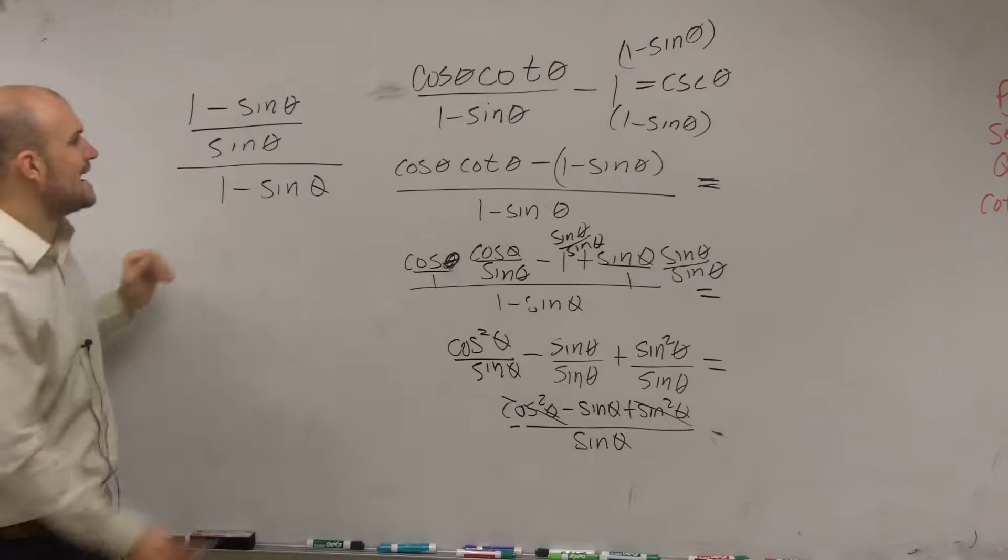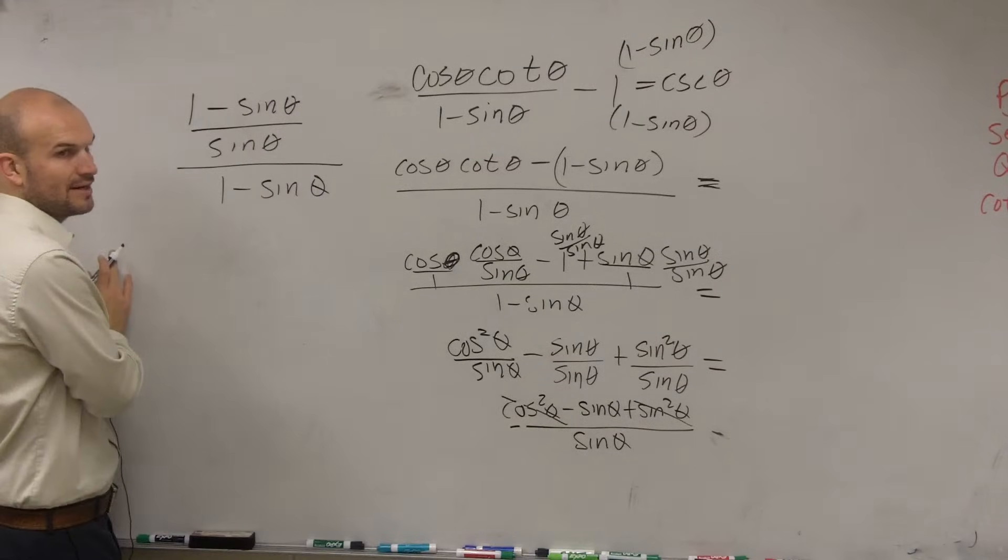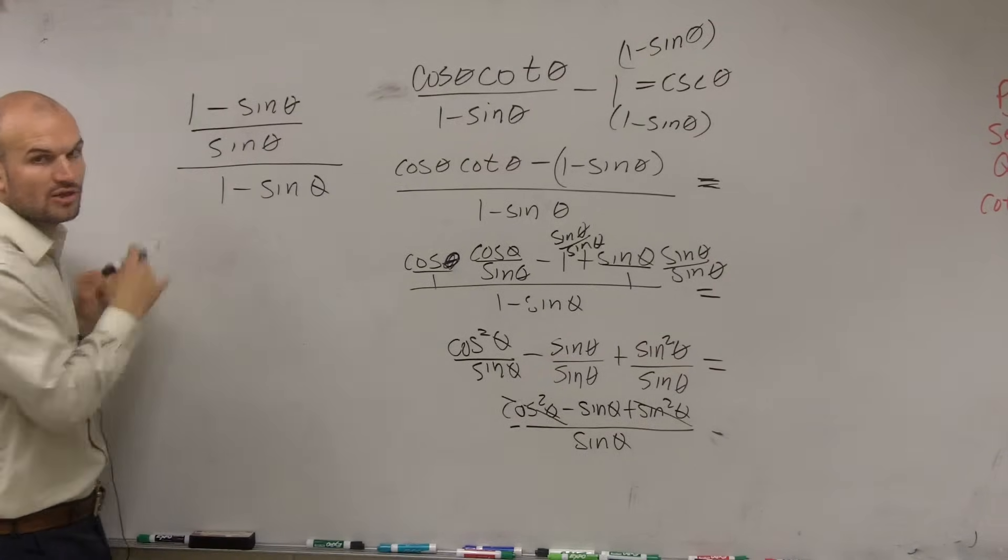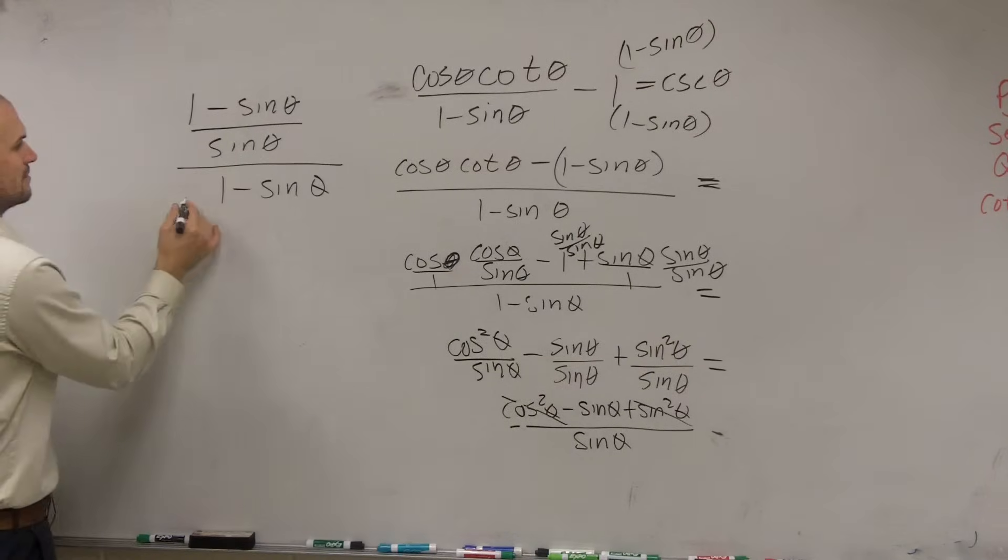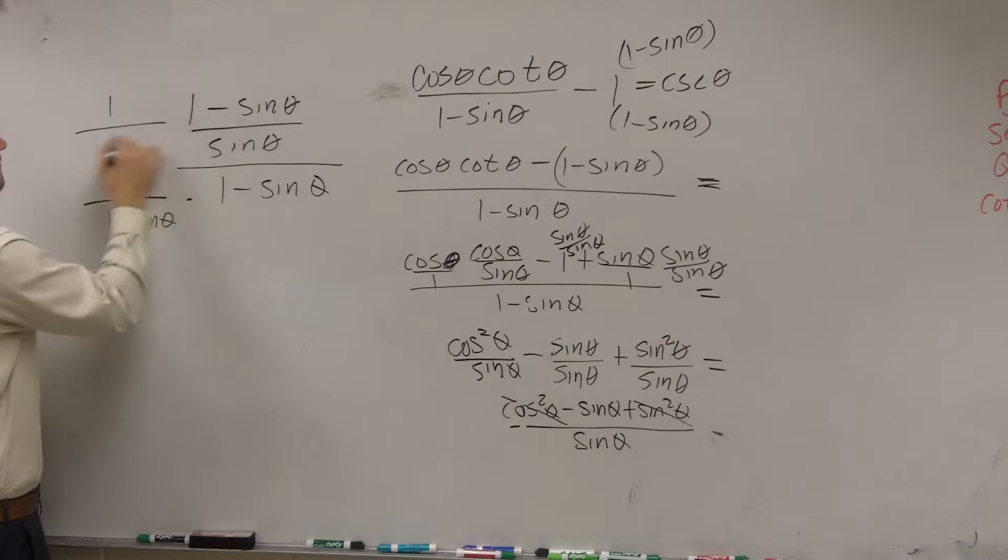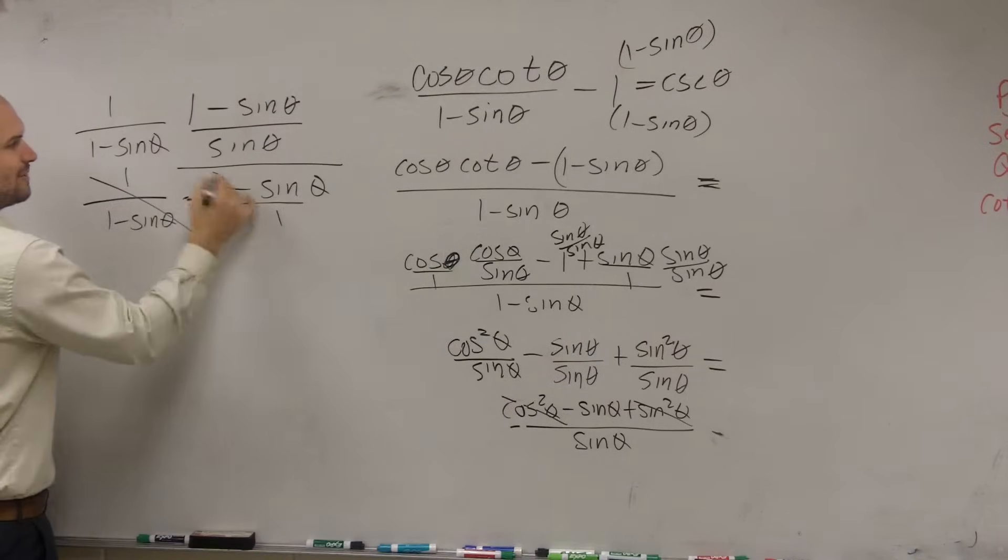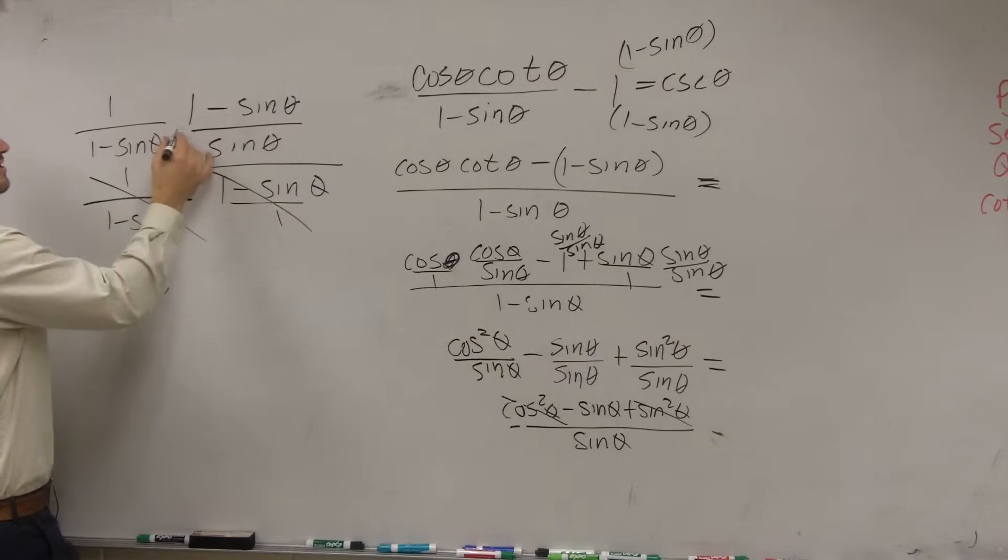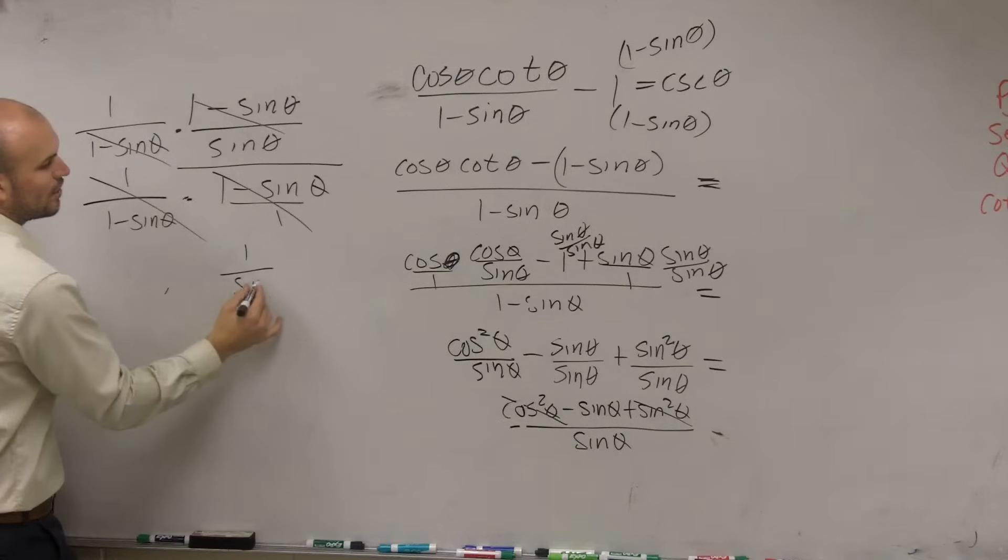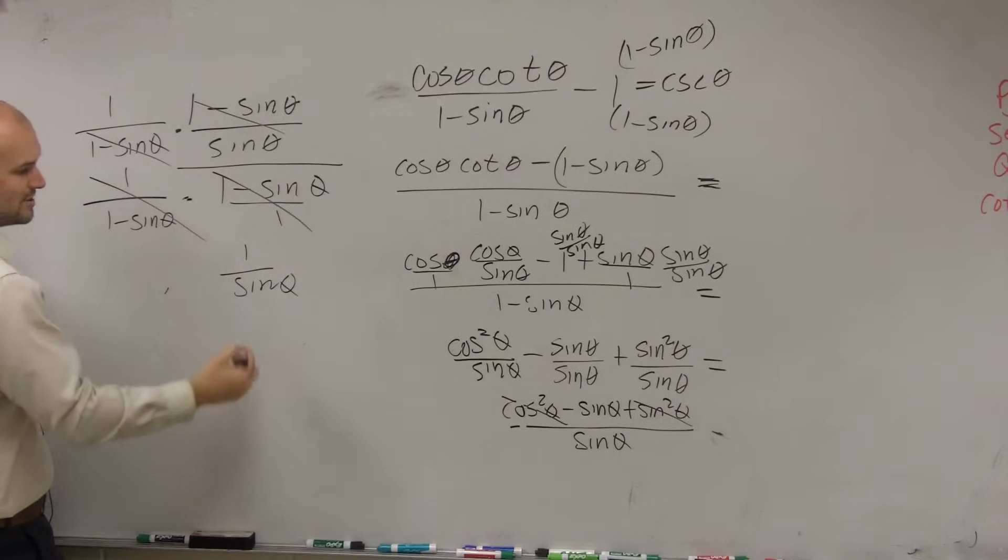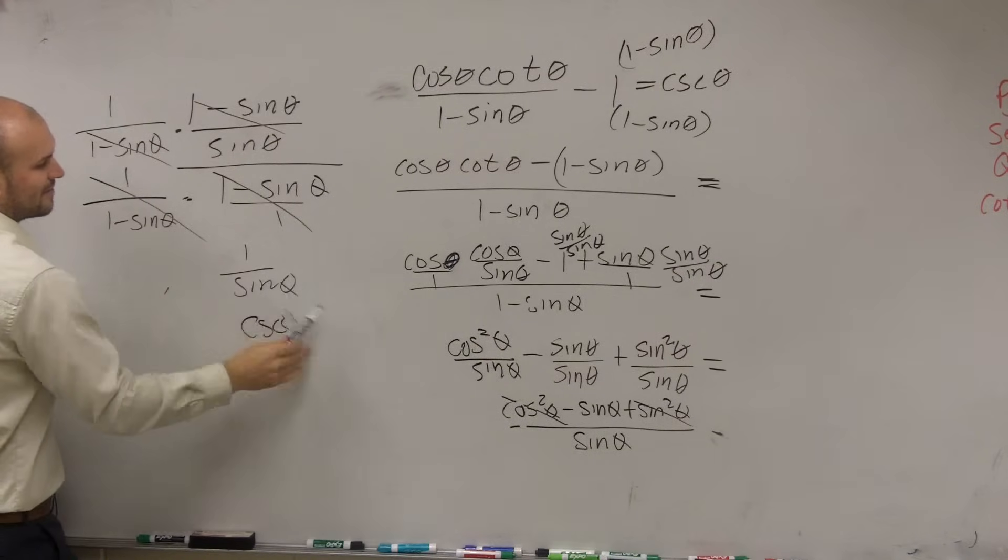So what do I need to do is, how do I get this off my denominator? Well, you can multiply it by its reciprocal, right? 1 over 1 minus sine of theta. 1 over 1 minus sine of theta. Well, any term multiplied by its reciprocal multiplies out to 1. Then, when you multiply the top, the numerator, by the reciprocal, those multiply out to 1, and you're left with 1 over sine of theta, which equals cosecant of theta.